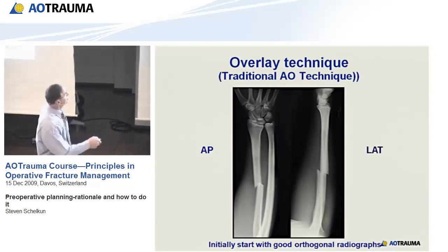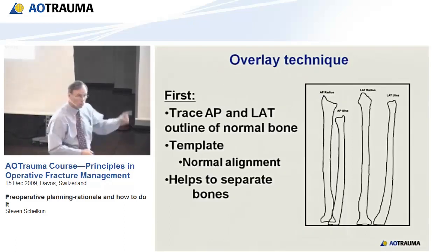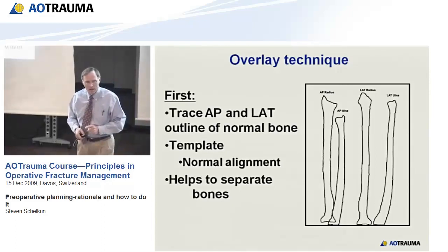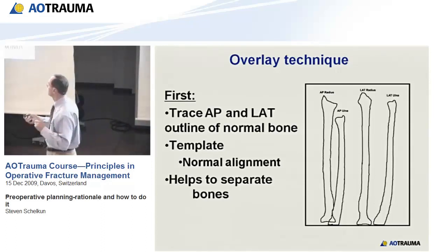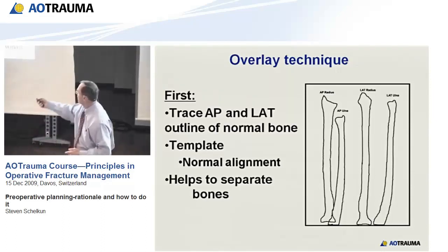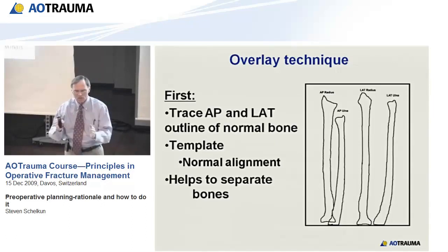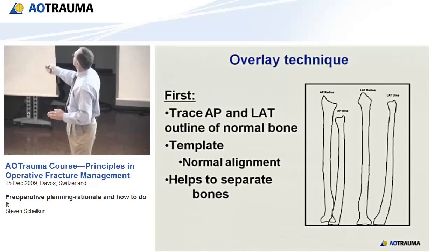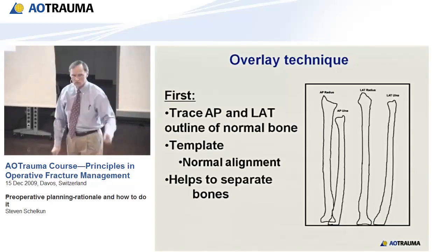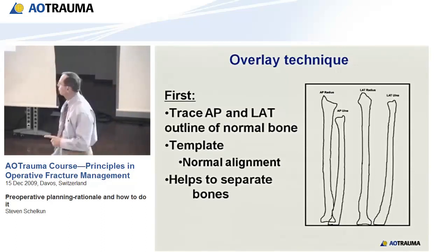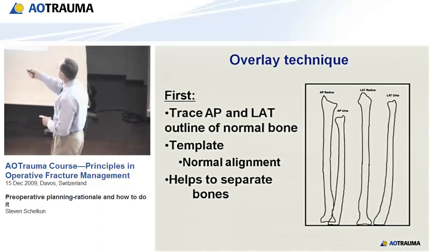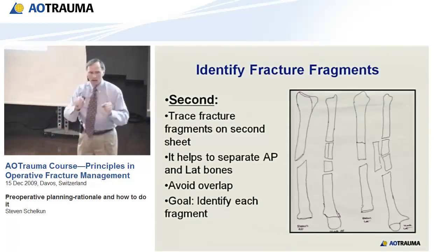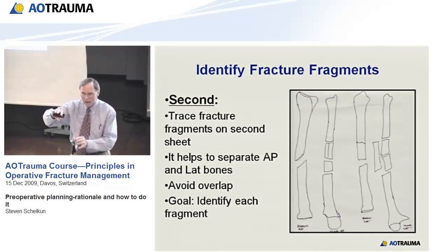The first step is to trace the outline of the normal bone so you have a template to produce your alignment — you have to know where you're going. It helps to separate the bone so there's no overlap: trace them out, separate so you can see a good AP and good lateral. Step two: trace the fracture fragments on a second piece of paper, separate them out so there's no overlap so you can see them.